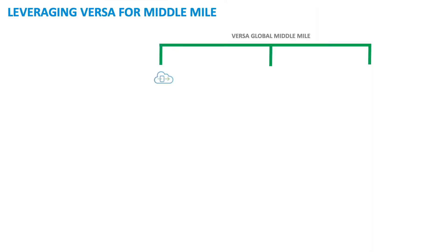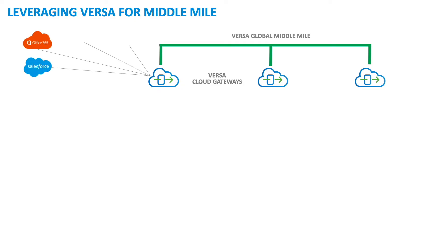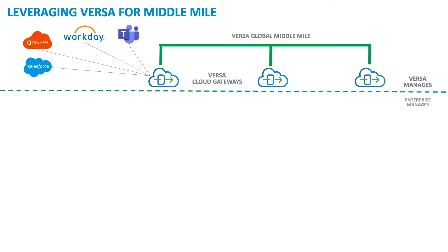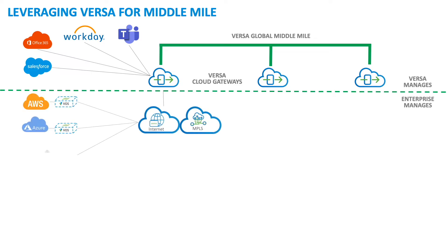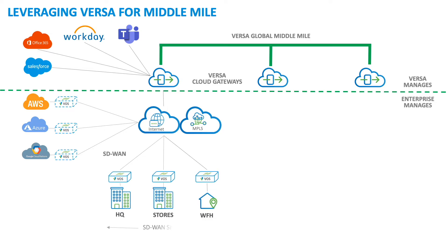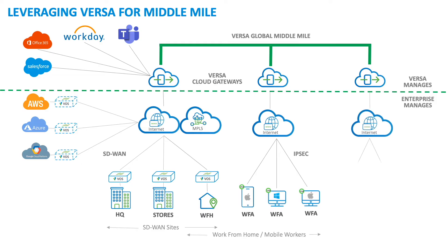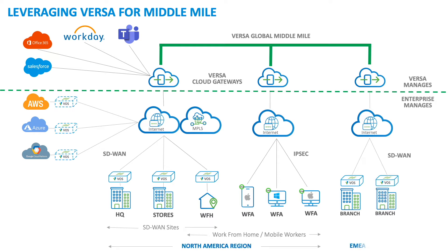Looking at leveraging Versa for the middle mile: we have one Versa Cloud Gateway in North America, another in EMEA, and multiple around the globe for secure connectivity for work from anywhere. A global middle mile of high-quality transport connects these together to deliver a unified global network, with Versa taking responsibility for your middle mile. Architecturally, this looks like a single global SD-WAN — a spoke-to-hub, hub-to-spoke topology — with global end-to-end traffic engineering across the entire network. This allows you to move hub routing, hub SD-WAN, and hub firewall functions out of your data center, with all Versa Cloud Gateways managed by Versa.